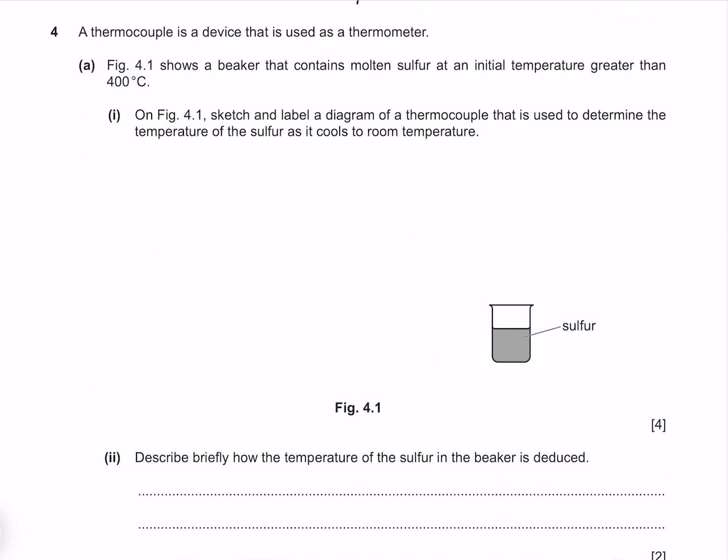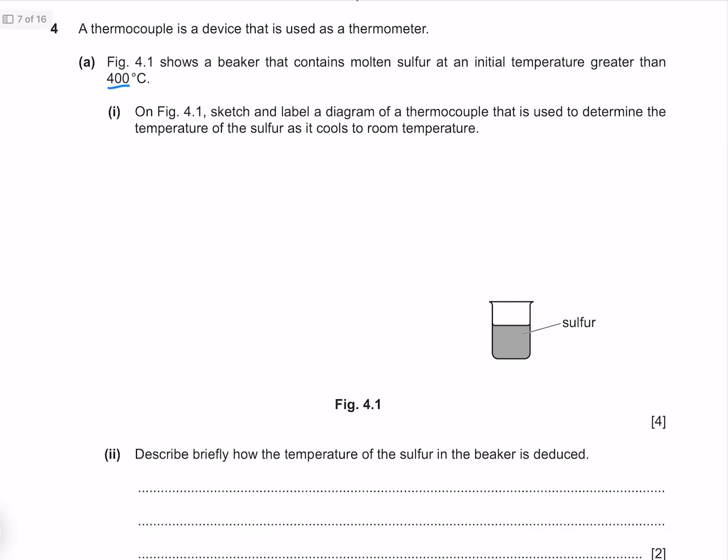A thermocouple is a device that is used as a thermometer. Figure 4.1 shows a beaker that contains molten sulfur at an initial temperature greater than 400 degrees Celsius. On figure 4.1 sketch and label a diagram of a thermocouple that is used to determine the temperature of the sulfur as it cools to room temperature. A thermocouple is a device that is used to compare the temperatures between two different things.